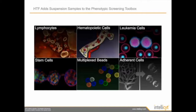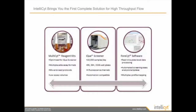HTF adds suspension samples to your screening capabilities, allowing you to work with many different types of samples, including lymphocytes, leukemia cells, and stem cells. You can work with multiplex beads and even adherent cells — the cells just need to be lifted off the plate. IntelliSite offers the complete solution for high-throughput flow.